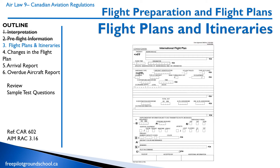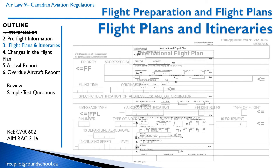Here is how a standard flight plan form looks. This one happens to be issued by the FAA — it says U.S. Department of Transportation — but if you get one from NAV Canada in Canada, they will look the same. The top section doesn't need to be filled out by you; that gets filled out by air traffic. Let's talk about how to fill out one of these flight plan forms, starting below the line.